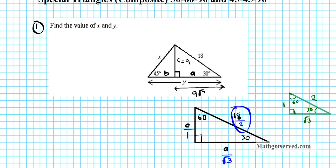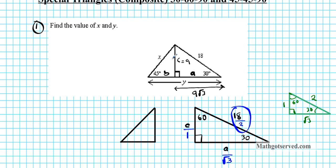Now let's shift our attention to the second triangle — the 45-45-90 triangle. We're treating them independently. This triangle has a 45-degree angle, side X, and side B. The third side is C, which we already determined equals 9 from the other triangle.